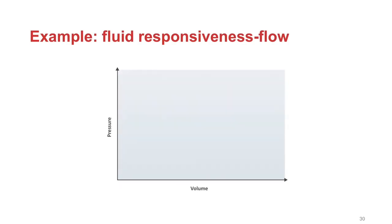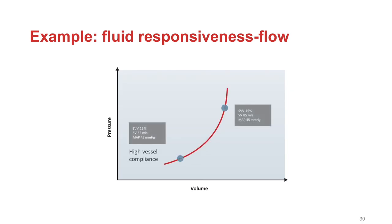If the individual is hypotensive, a fluid bolus might be appropriate only if it increased mean arterial pressure; otherwise a vasopressor or inotrope may be more appropriate. Knowing that the subject is fluid responsive does not immediately answer these questions. Two individuals with the same stroke volume, stroke volume variation and mean arterial pressure may both be fluid responsive, yet the individual with high vessel compliance will increase stroke volume to a fluid bolus but is unlikely to increase mean arterial pressure due to vasoplegia, making fluid therapy potentially inappropriate. The individual with low vessel compliance will increase stroke volume and probably also increase mean arterial pressure, making fluid therapy the correct treatment. Additional parameters such as dP/dT and Ea/Ees can aid decision making.